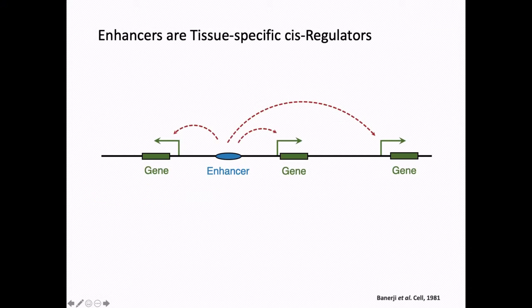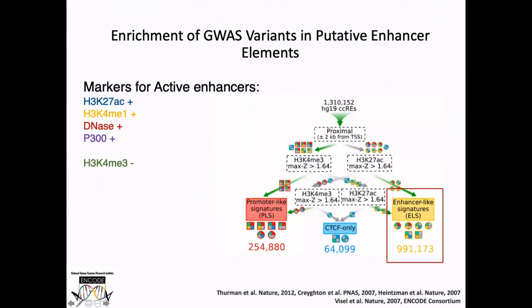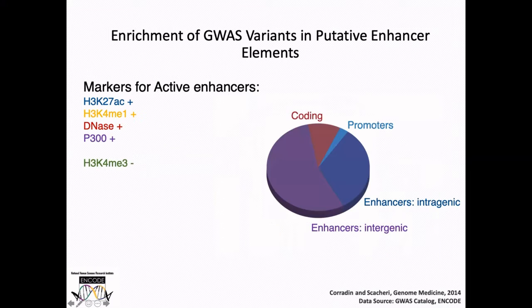To start with some background about enhancers: enhancers, first reported in the 1980s, are cis-regulatory elements on our genome which are believed to provide cell-type-specific transcriptional regulation to genes. In the past decade, the field has used a lot of epigenetic markers to identify potential enhancer regions. The ENCODE data has used markers such as histone marks, DNase hypersensitivity, and p300 binding to identify almost a million enhancers across different cell types of the human genome. And importantly, many GWAS hits are located within enhancer regions or enhancer-neighboring regions, emphasizing the importance of enhancers during disease and development.